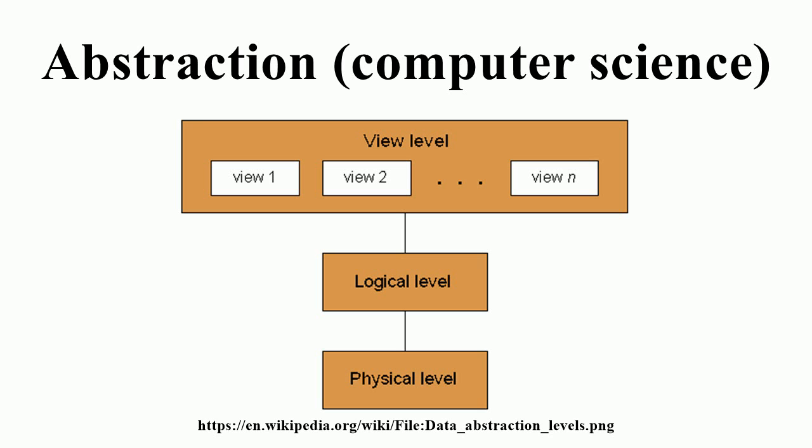Greenspun's tenth rule is an aphorism on how such an architecture is both inevitable and complex. A central form of abstraction in computing is language abstraction.